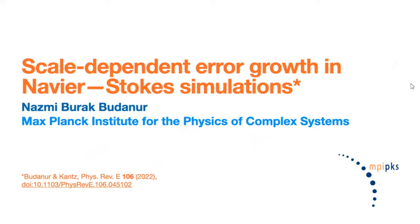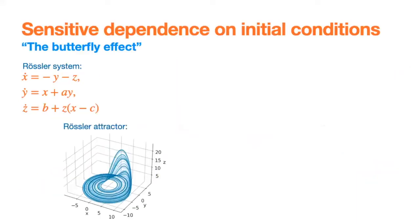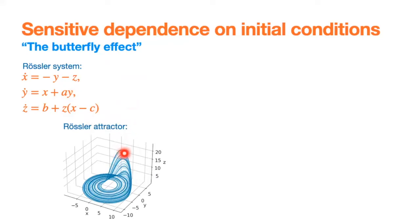Let me begin with a brief introduction to the idea of sensitive dependence on initial conditions, which is essentially the defining property of a chaotic system. I'll introduce this using the Rössler system — a three-dimensional chaotic system described by three ordinary differential equations. With certain parameters a, b, c, if you start from a random initial condition and integrate using a numerical integrator, you get what's called the Rössler attractor.